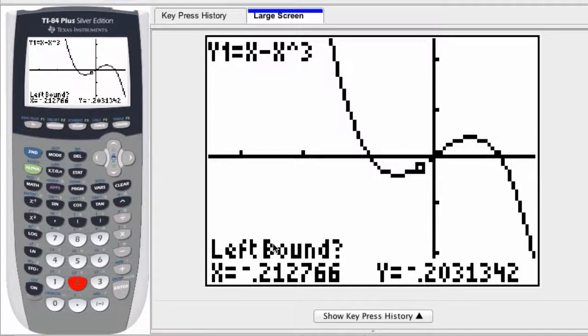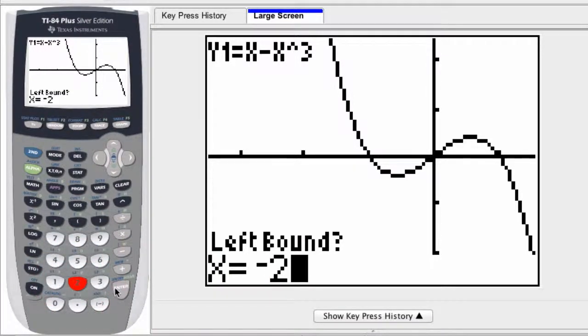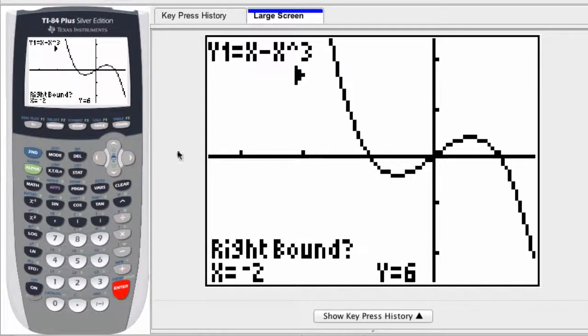If I enter in an x value of negative 2, that starts my interval and I press enter. There's negative 2 for x. Let's say the right bound is at negative 1, or let's say negative 0.5. Press enter.